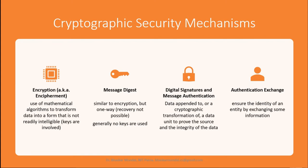Digital signatures and message authentication involve data appended to, or a cryptographic transformation of, a data unit to prove the source and integrity of the data. Source authentication and integrity can be achieved using message authentication and digital signatures. Message digest is more about hashing — similar physically to error correction code — while digital signature is different. Message authentication mostly involves hashing, such as the SHA algorithm.